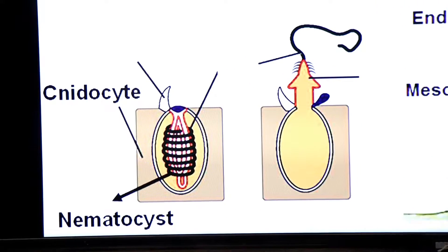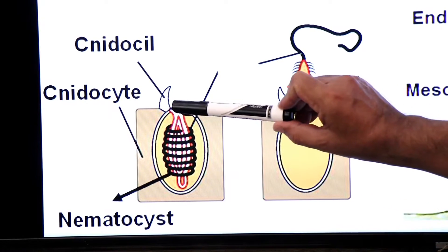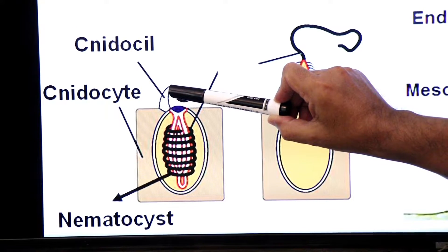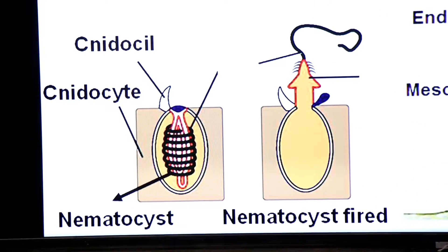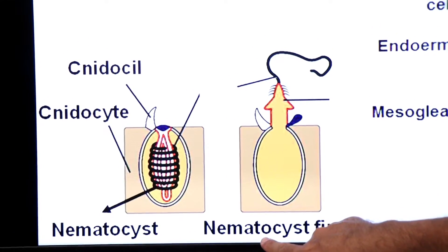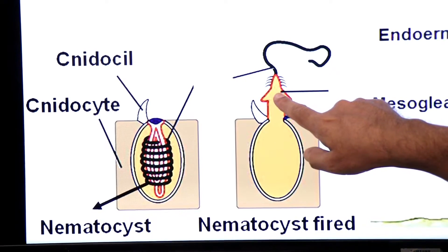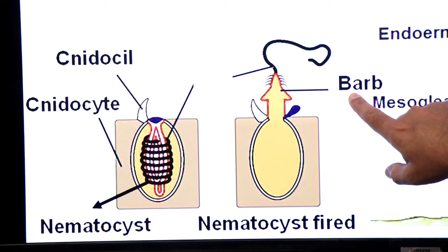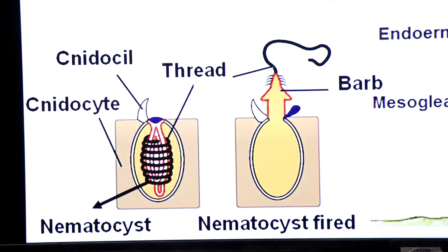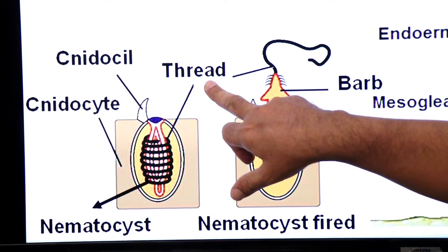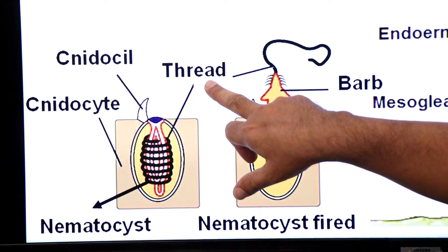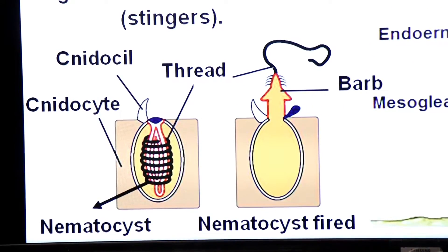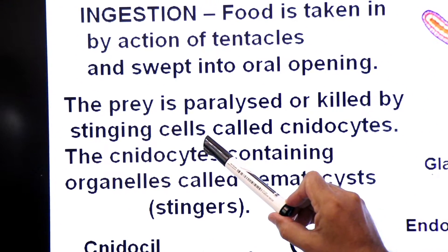There is a hair-like sensitive projection known as a nidocil. This nidocil is sensitive to touch and acts as a trigger. When triggered, the nematocyst is fired onto the prey. The nematocyst has a sharply pointed structure called a barb, which penetrates the flesh of the prey. A thread releases toxin that paralyzes the prey.